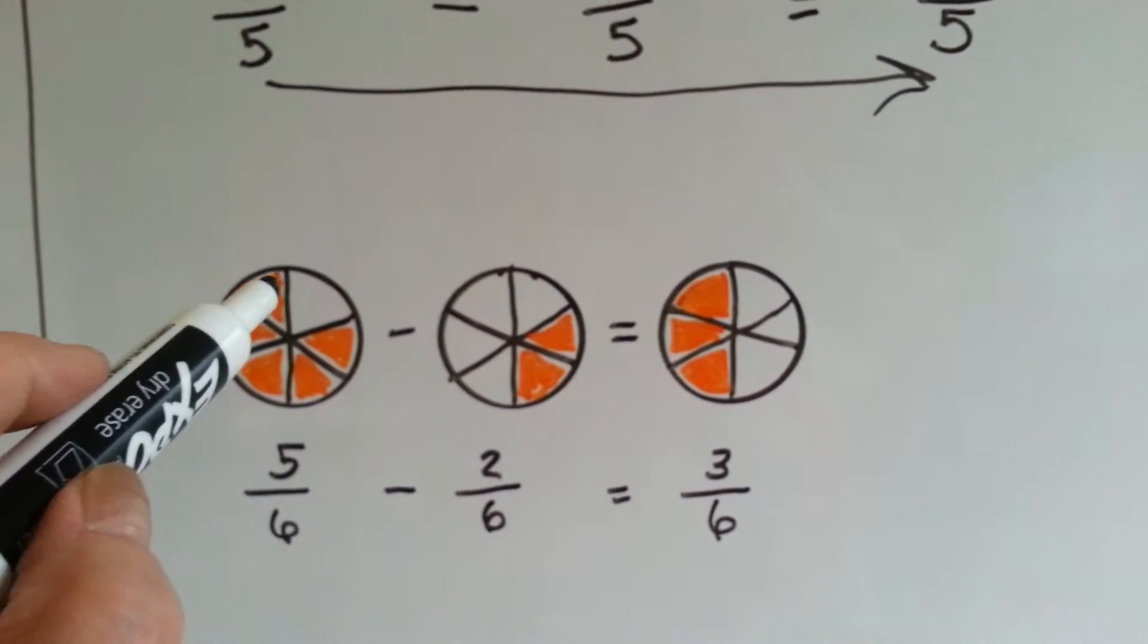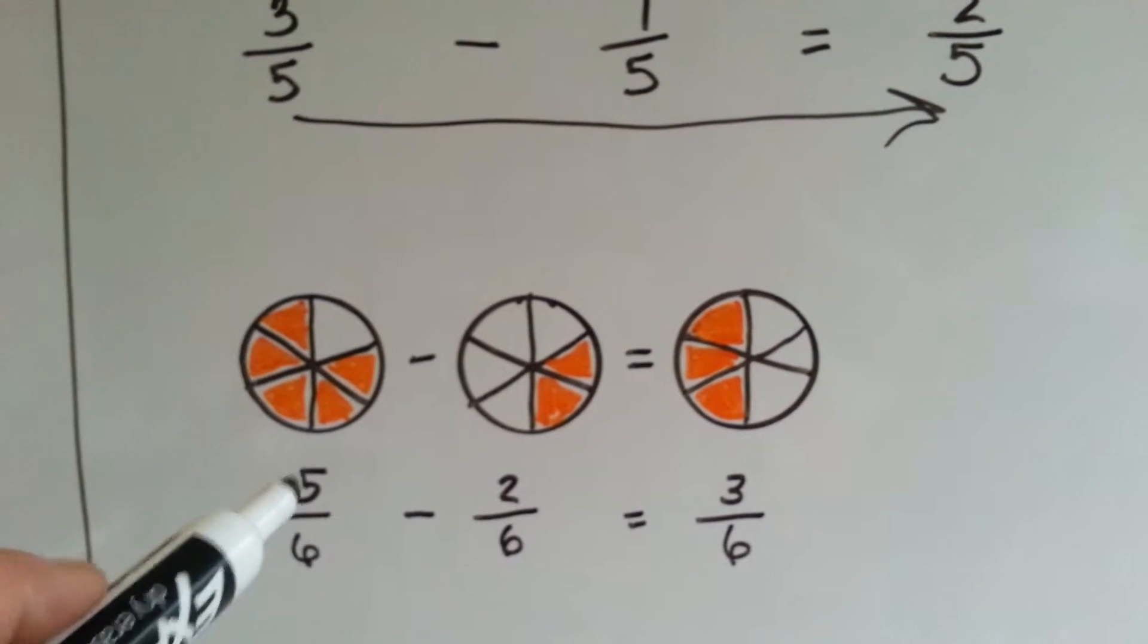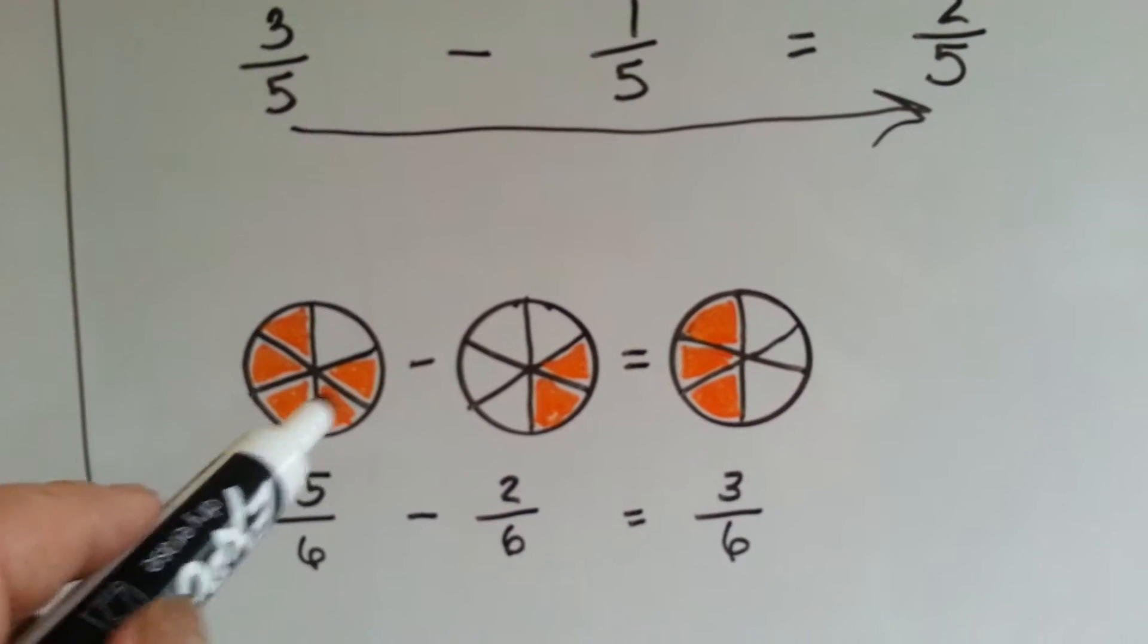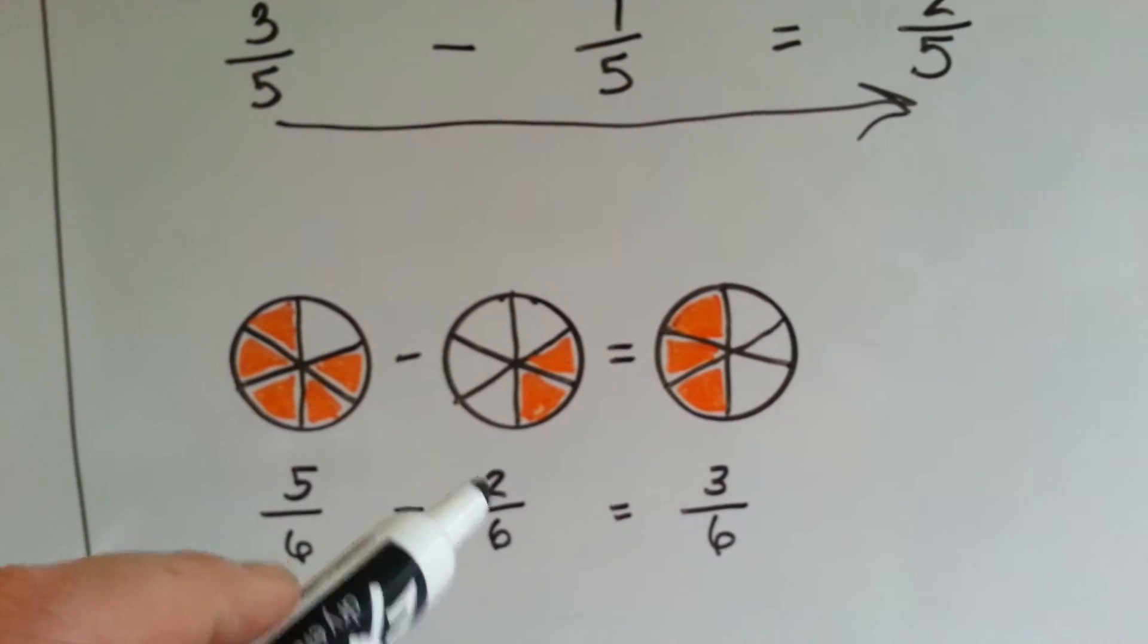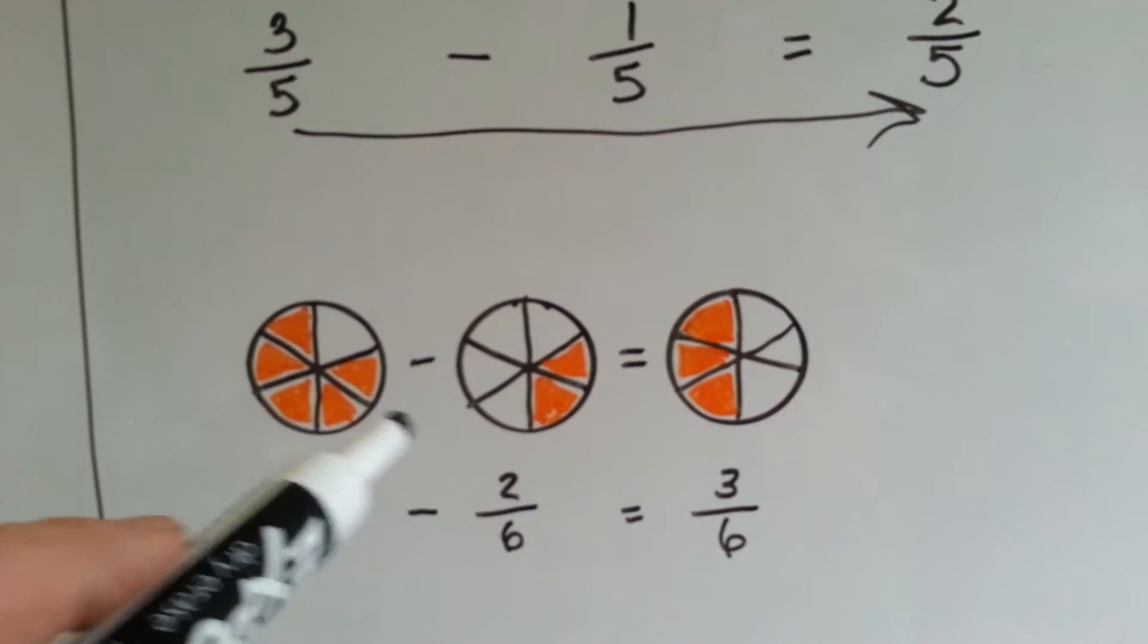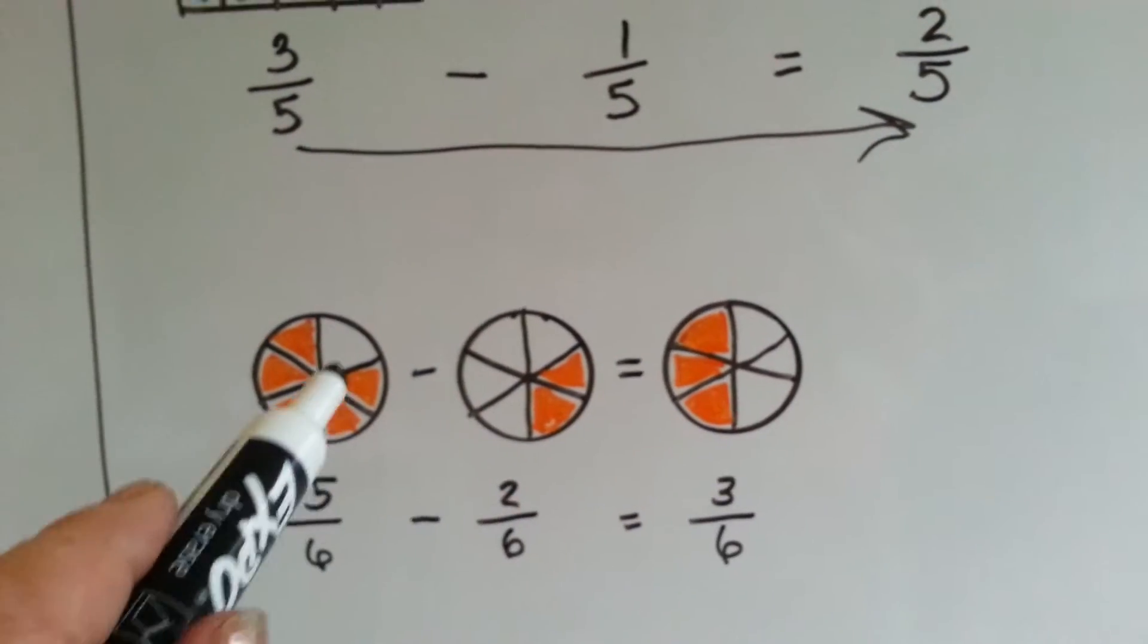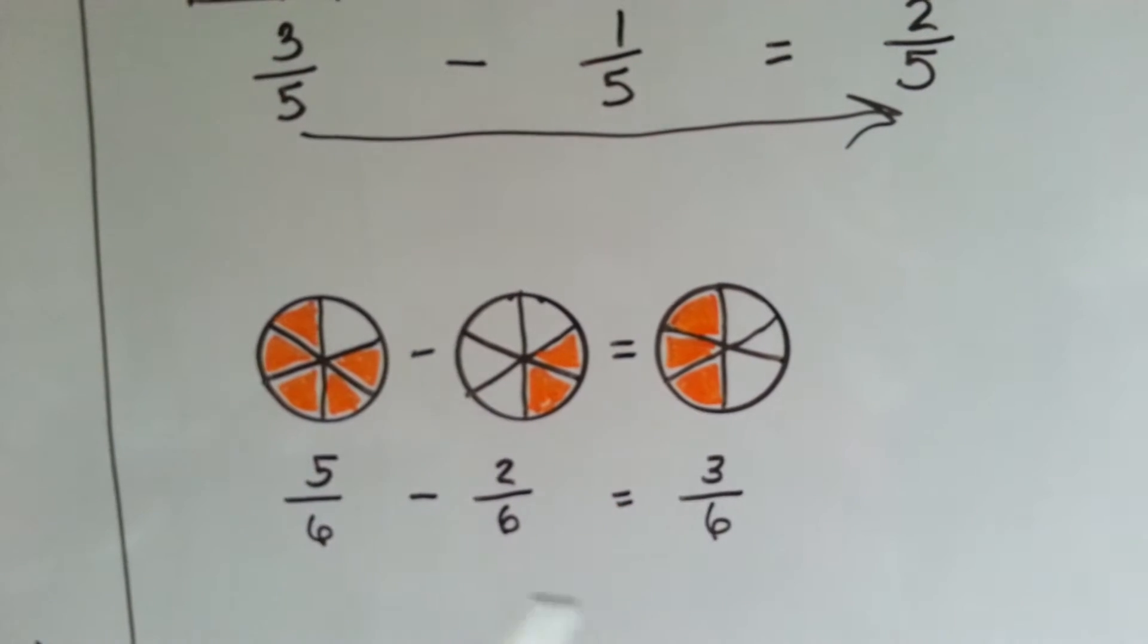This is split into one, two, three, four, five, six pieces. Five of the six pieces are orange. Five parts of the six are orange. If we take away those two, right here, two sixths. There's two of them. It's right here. It would look like this. If we took these two away, see how it would look like that?